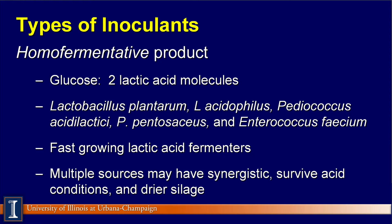There are two types of inoculants. The first is a homofermentative product, where one mole of glucose breaks down to two moles of lactic acid. Typical bacteria that enhance this type of fermentation are listed. These are the fast-growing lactic acid fermenters — the good guys. By putting in more than one source, you may get a synergism where they work better in conjunction, with some more active under acid conditions and some more effective in drier silages.